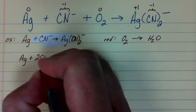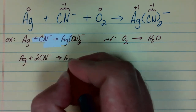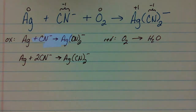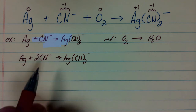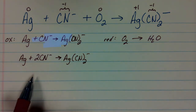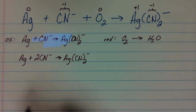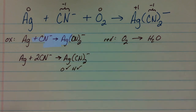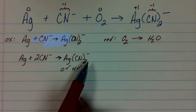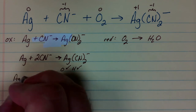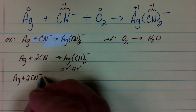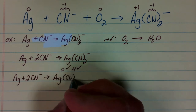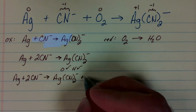Now we'll balance the oxidation half-reaction. We make sure all atoms except oxygen and hydrogen — which aren't present — are balanced. A coefficient of 2 on cyanide does just that. Oxygen and hydrogen atoms are absent but balanced. To balance charge, we have negative 2 on the left and negative 1 on the right, so we add 1 electron to the right side to bring the total charge on both sides to negative 2.